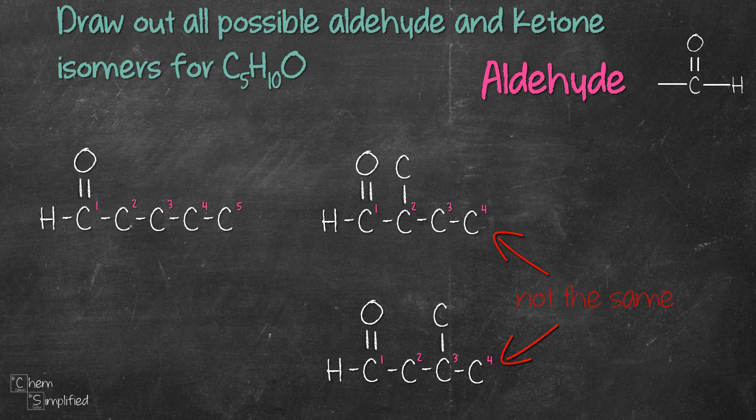And we're now done with four carbon chain because if we were to stick the fifth carbon on carbon 4 it will give us a five carbon chain which is the same as our first structure. Now let's see what we can do with a three carbon chain aldehyde. We've used three carbon and one oxygen so that means we have two carbon left. So let's stick the two carbons on carbon 2.